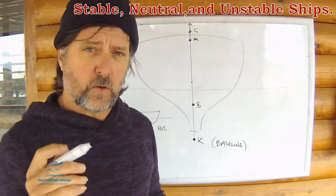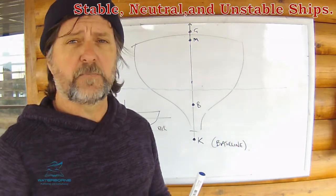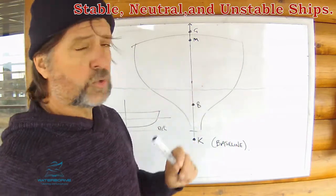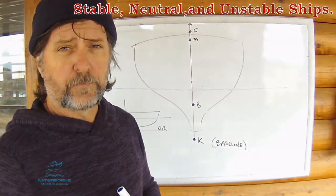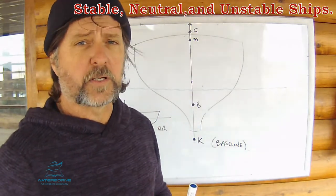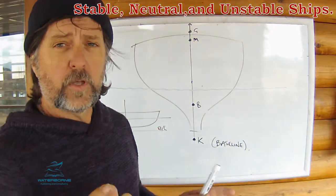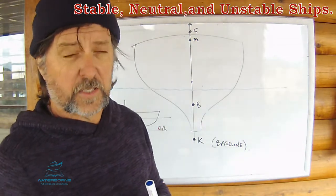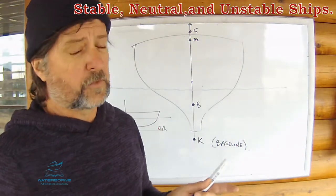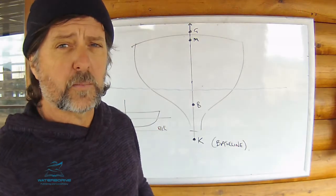The ship has gone from stability to neutral equilibrium and now to instability. This ship, when inclined, will not have a GZ — it'll have a ZG. It's a negative righting lever; in fact it's a capsizing lever, and we'll draw that in a moment.